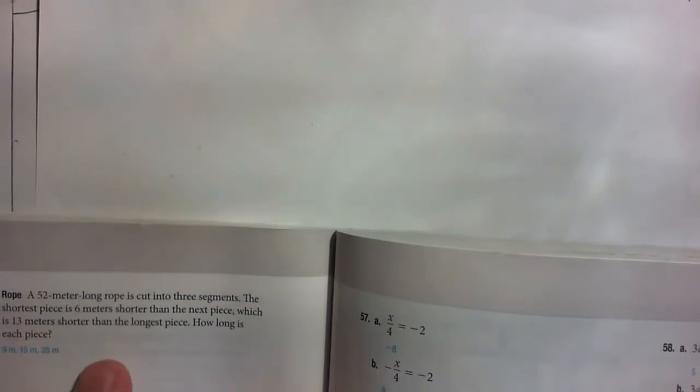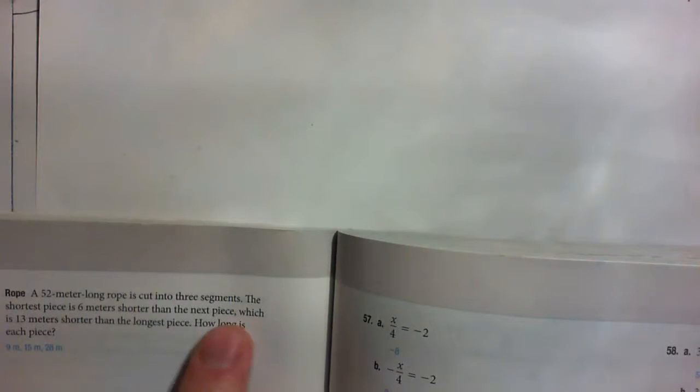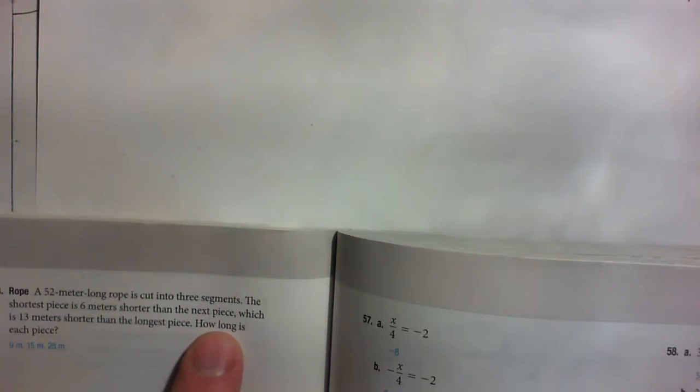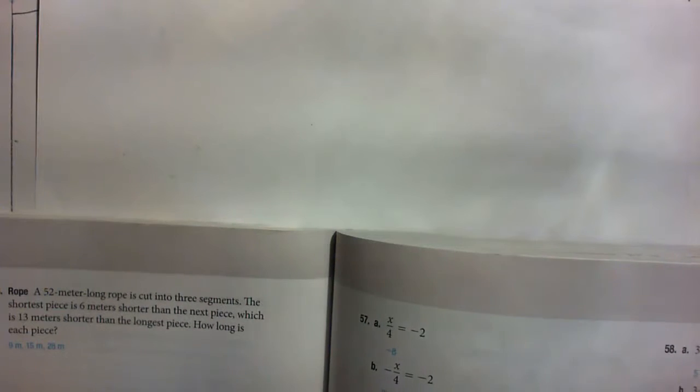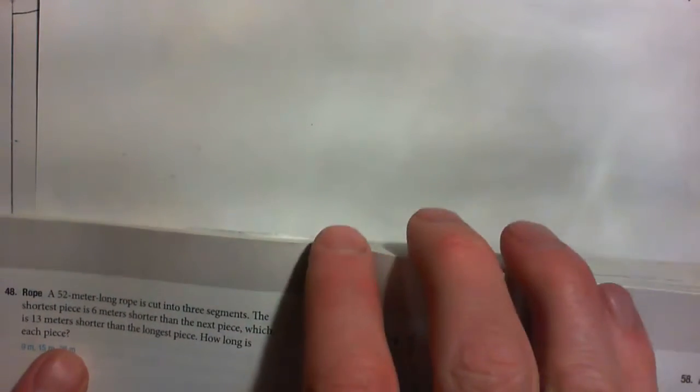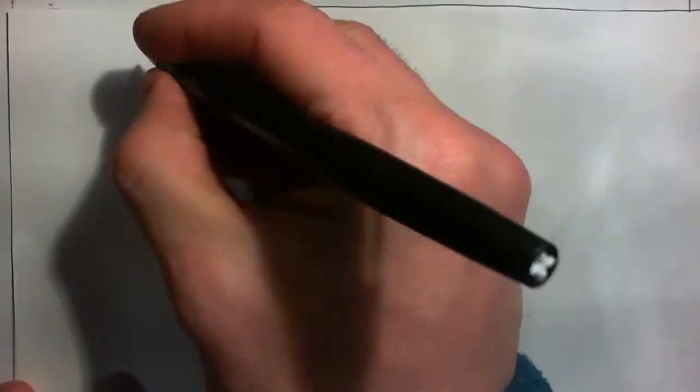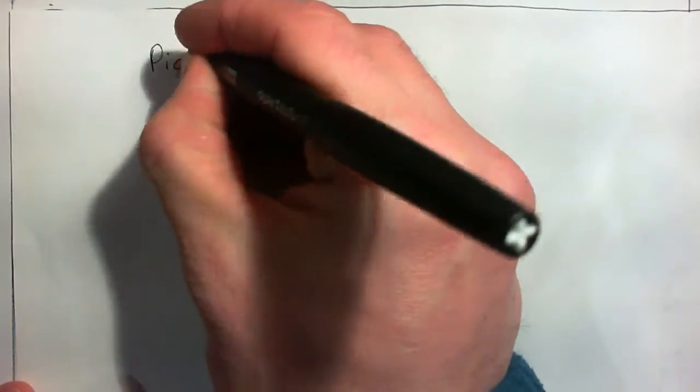Alright, so let's try this question. A 52 meter long rope is cut into three segments. The shortest piece is 6 meters shorter than the next piece, which is 13 meters shorter than the longest piece. How long is each piece? So my advice is to first of all pick a nice number like 10. We'll use this nice number of 10 to try to help us figure out the problem.